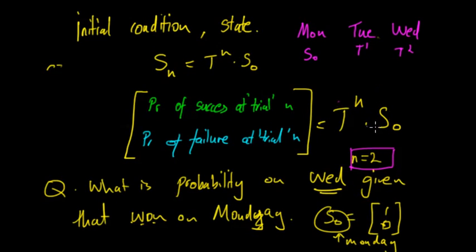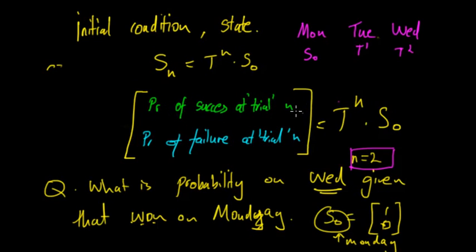You get your calculator out, set up T, and put T to the power of two times the initial condition. It will give you a two by one matrix. You can say the probability of success on Wednesday is equal to whatever the top number is, and the probability of failure on Wednesday is the bottom number.